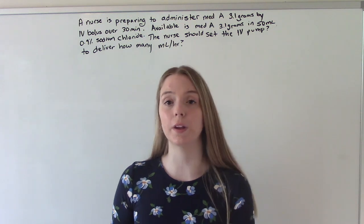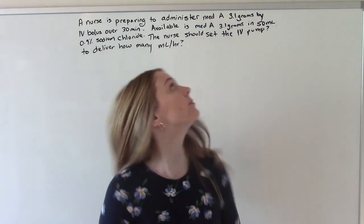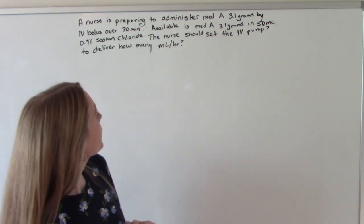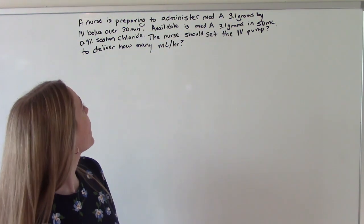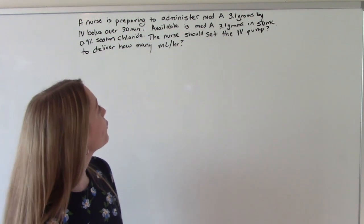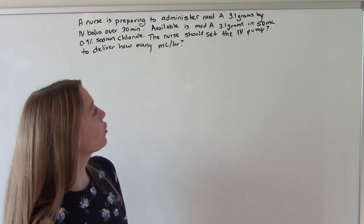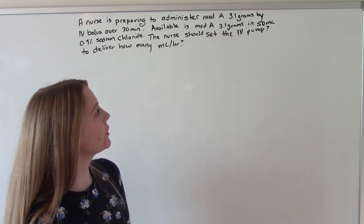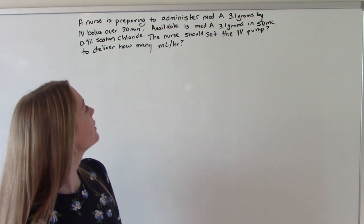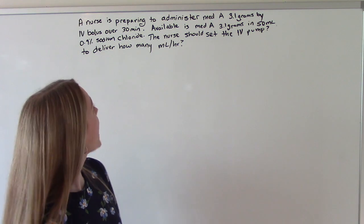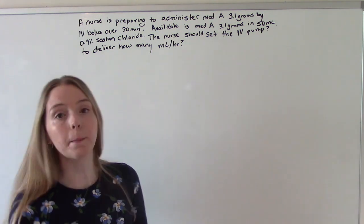Now let's do a few with mLs. So the nurse is preparing to administer medication A, 3.1 grams by IV bolus over 30 minutes. Available is medication A, 3.1 grams in 50 mLs, 0.9% sodium chloride. The nurse should set the IV pump to deliver how many mLs an hour.